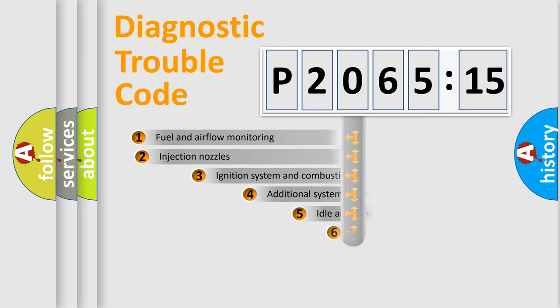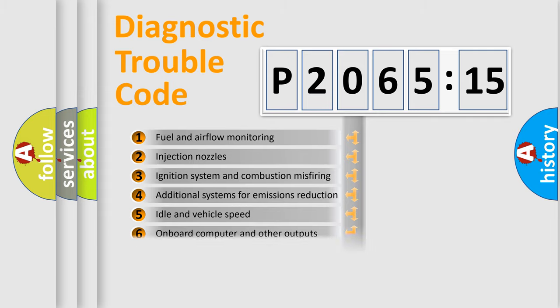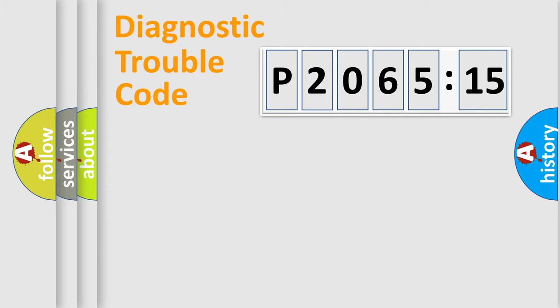The suffix to the error code serves to specify the status in more detail, for example, a short to ground. Let's not forget that such a division is valid only if the second character code is expressed by the number zero.